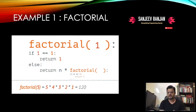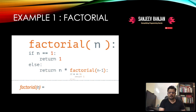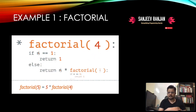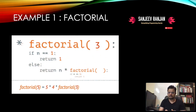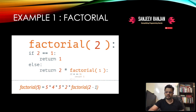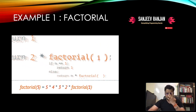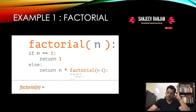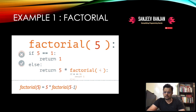It gives the result in the form of each factorial function call, and when it returns the base value it propagates back up. So it converts to five into factorial(4), then four into factorial(3), then three into factorial(2), two into factorial(1), and finally one returns its value. This is how recursion actually works.